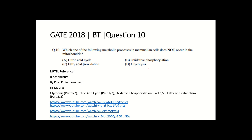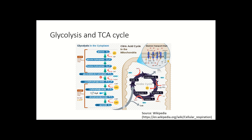Let's see the processes one by one. Glycolysis occurs in the cytoplasm. Glucose enters glycolysis in the cytosol and is converted to glucose-6-phosphate, then fructose-6-phosphate, and ultimately two molecules of pyruvate. One glucose molecule gives two molecules of pyruvate at the end of glycolysis. This entire process occurs in the cytoplasm.